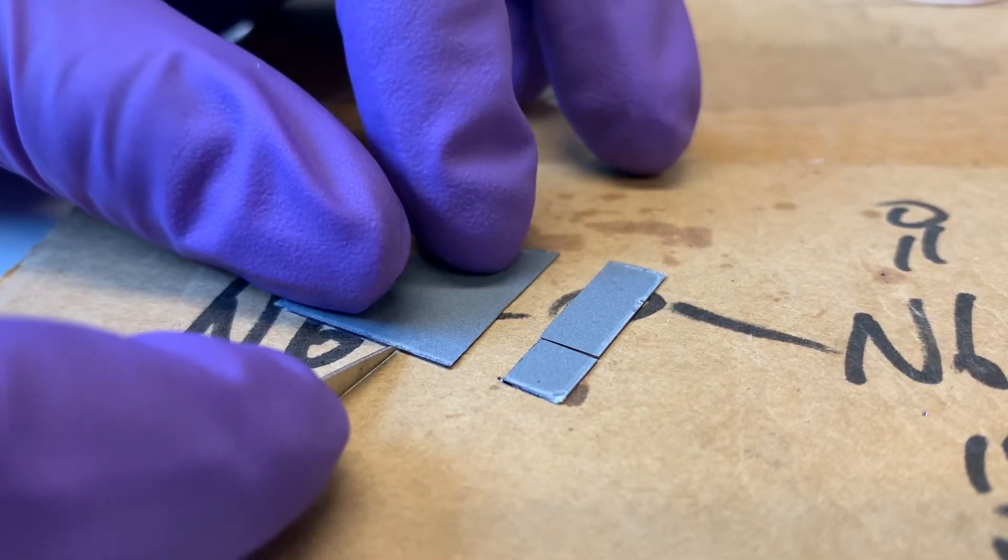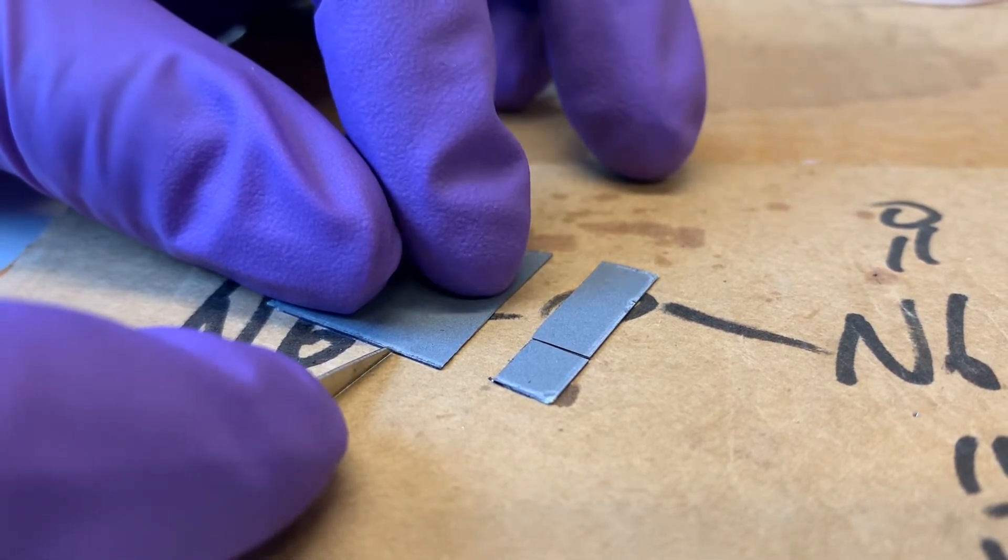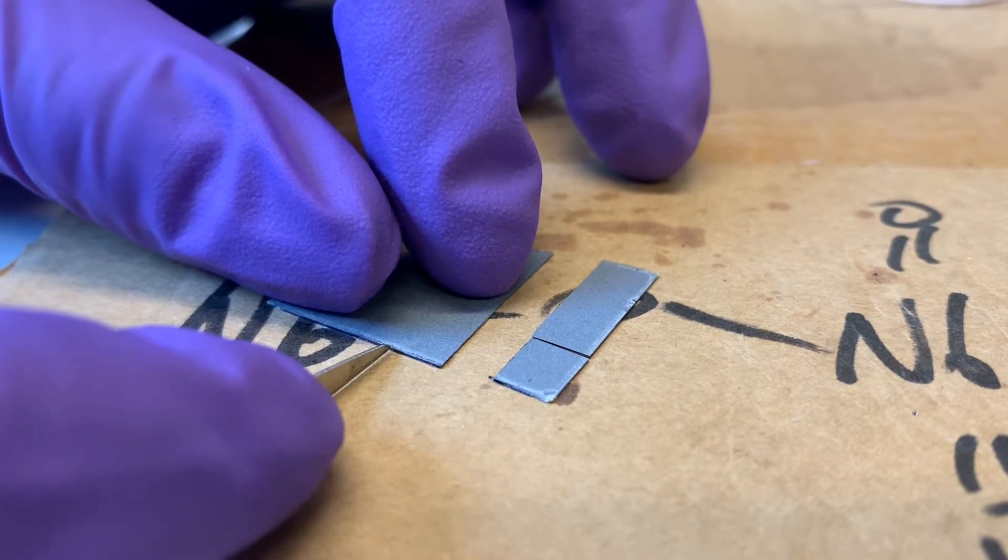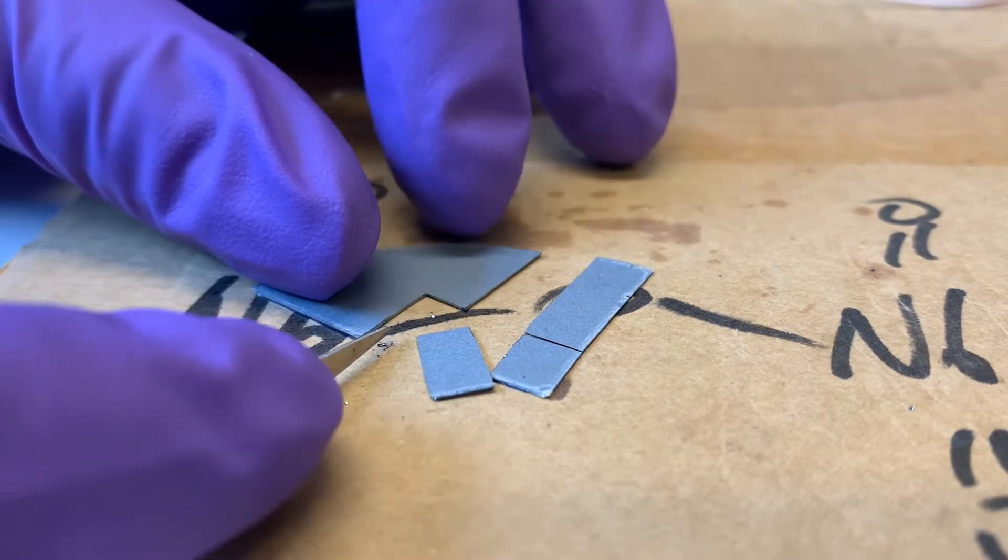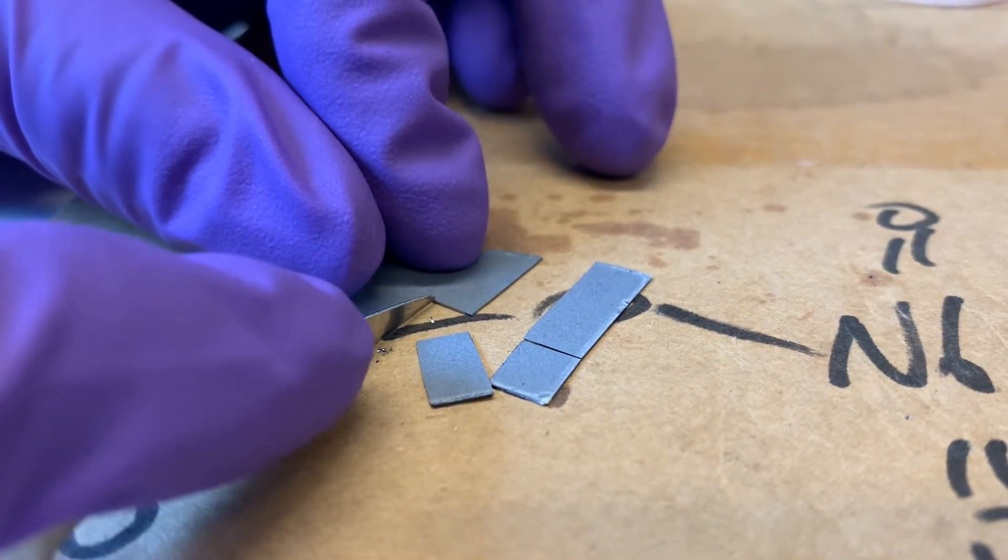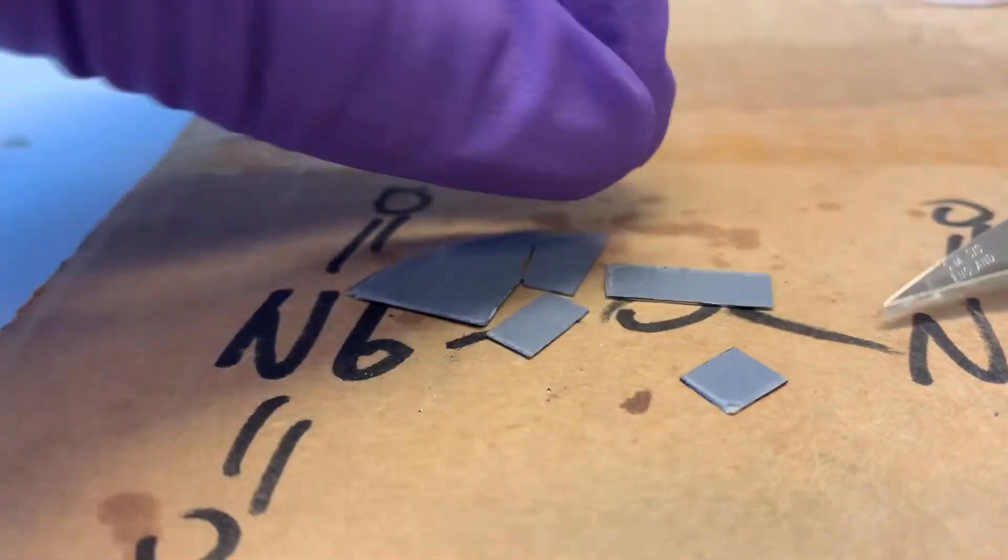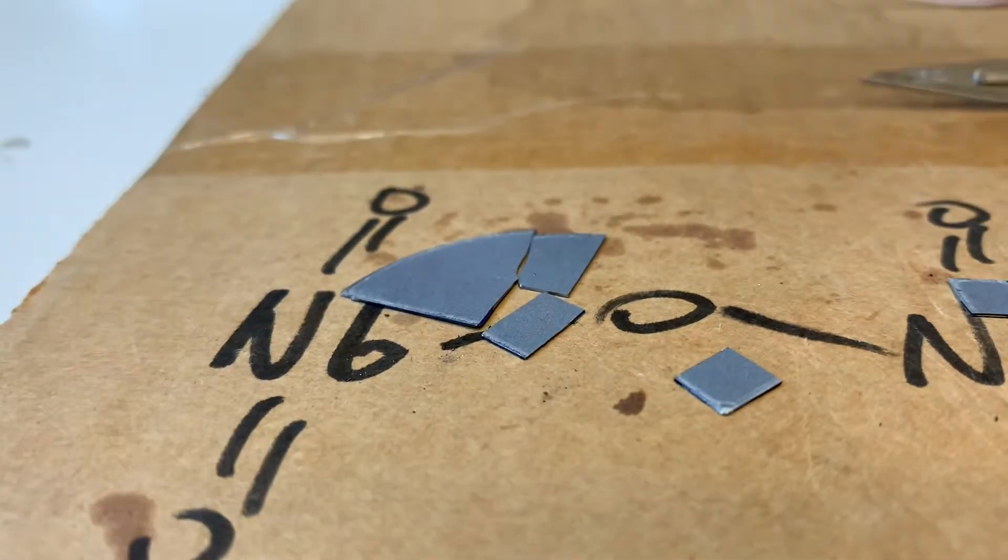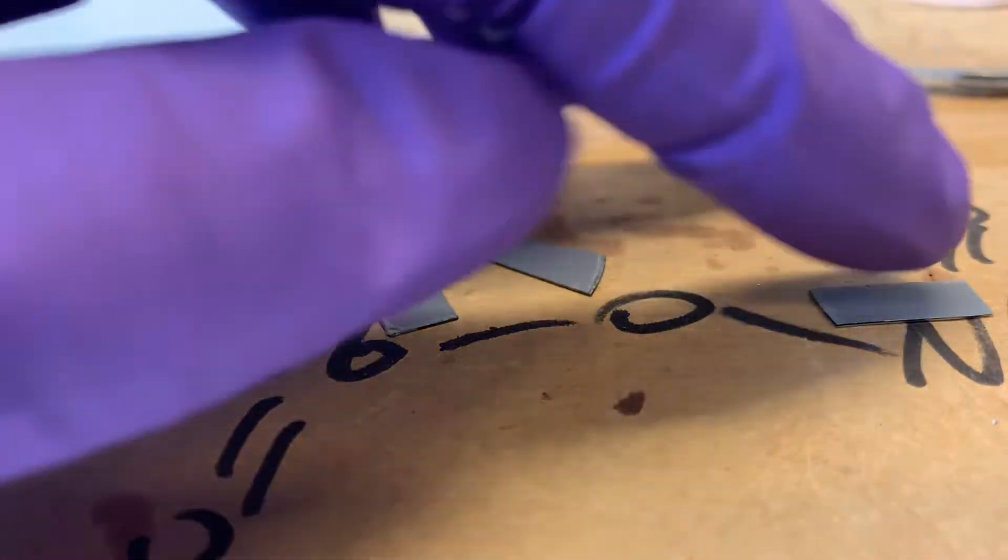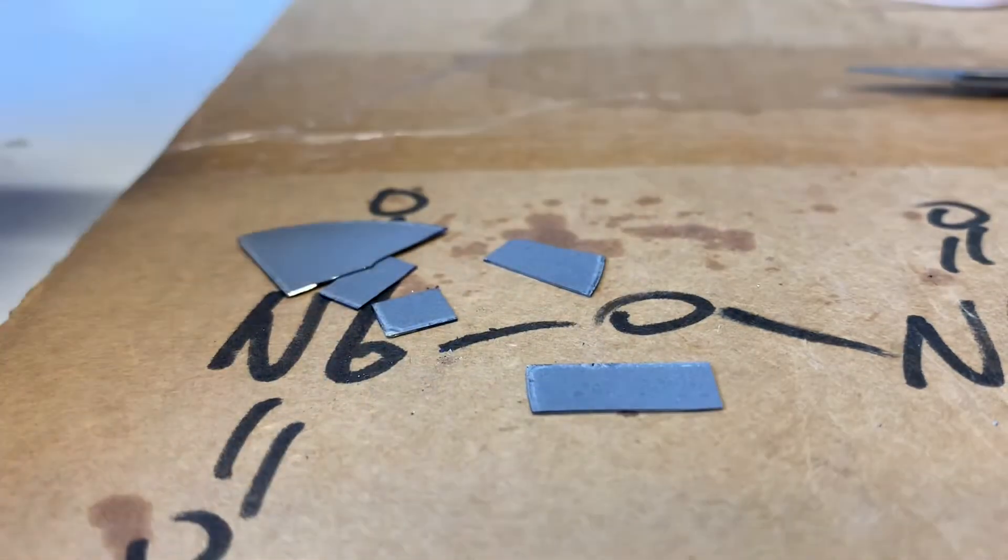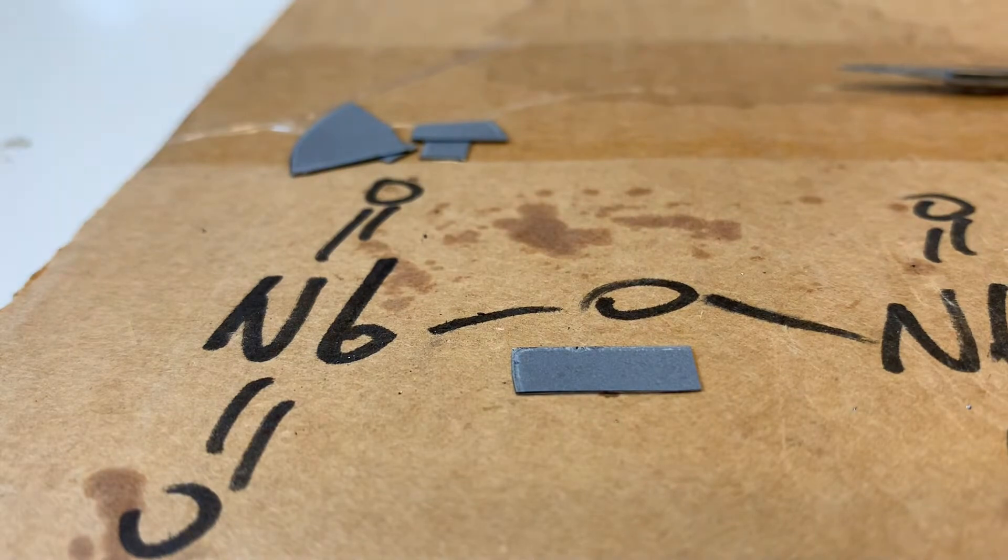So I'll do it once more because I want a very long piece for making this electrode. And ideally for the electrochemical measurements, a long wafer is best. Okay, now I have quite a few pieces but I will take the longest one that I have here.